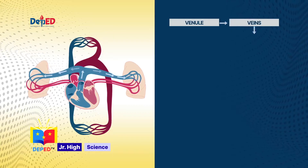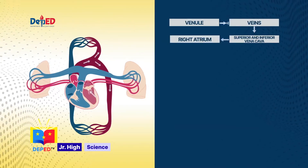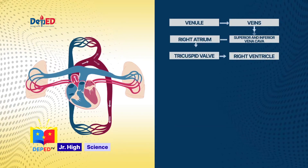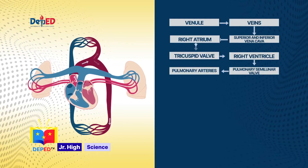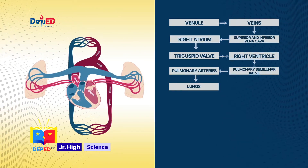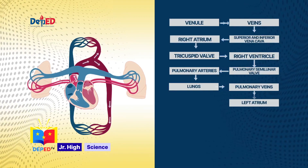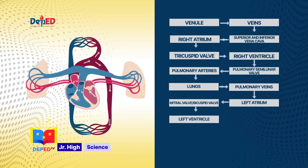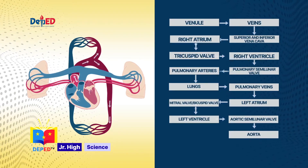Then it will enter the superior and inferior vena cava. The deoxygenated blood will enter the right atrium and pass through the tricuspid valve, down to the right ventricle. Then the deoxygenated blood will pass through the pulmonary semilunar valve — sometimes called the pulmonic valve — going to the pulmonary arteries, and enters the lungs for oxygenation. After that, the now-oxygenated blood will pass into the pulmonary veins, going to the left atrium, after which it passes through the mitral valve — also known as the bicuspid valve — reaching the left ventricle, and then passes through the aortic semilunar valve and enters the aorta, where the blood is ready for ejection.